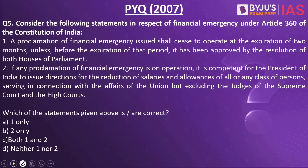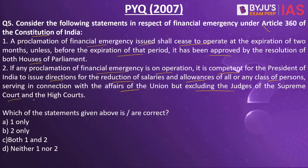Now let's look into the next practice question. Consider the following statements in respect of financial emergency under Article 360 of the Constitution of India. A proclamation of financial emergency issued shall cease to operate at the expiration of two months unless before the expiration of that period it has been approved by a resolution of both Houses of Parliament. If any proclamation of financial emergency is in operation, it is competent for the President of India to issue directions for the reduction of salaries and allowances of all or any class of persons serving in connection with the affairs of the Union, but excluding the judges of the Supreme Court and the High Court.